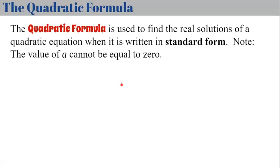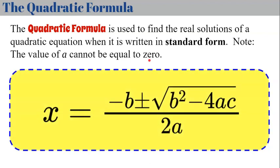The quadratic formula is used to find the real solutions of a quadratic equation when it is written in standard form, noting that the value of a cannot be equal to zero. If a were zero, then we'd have 0x squared, meaning no x squared term, making it a linear function. The quadratic formula states that x equals negative b plus or minus the square root of b squared minus 4ac, all divided by 2a. With the plus or minus, we could have two roots, one root, or no real solutions.